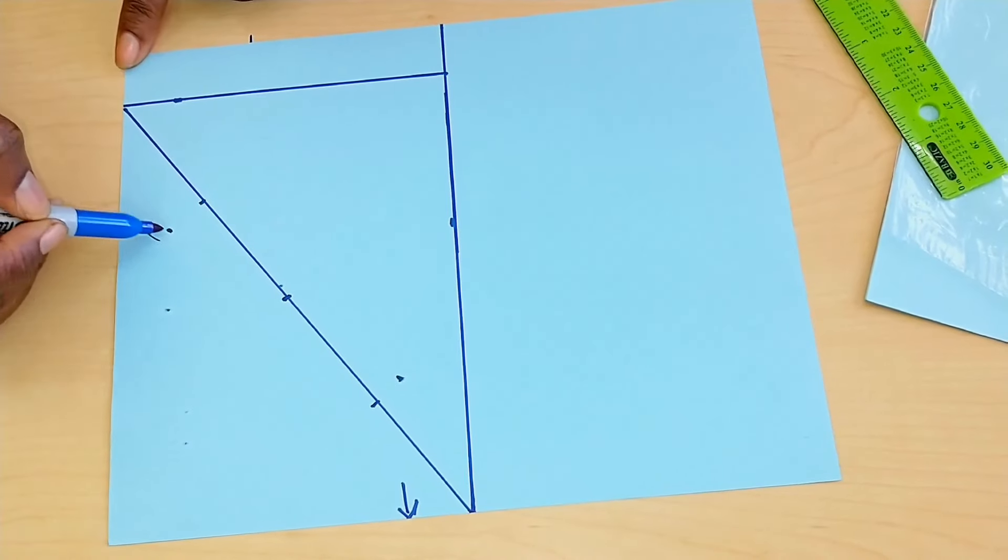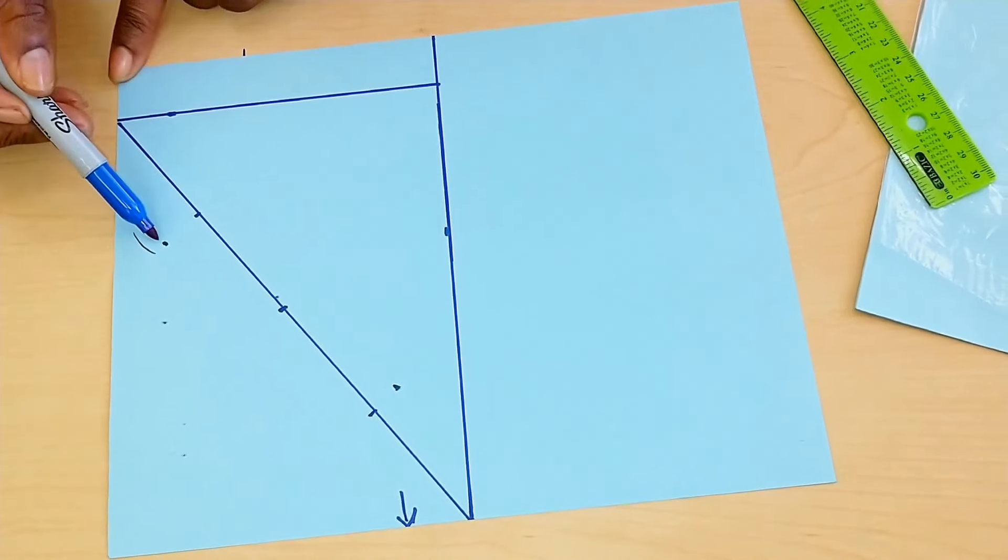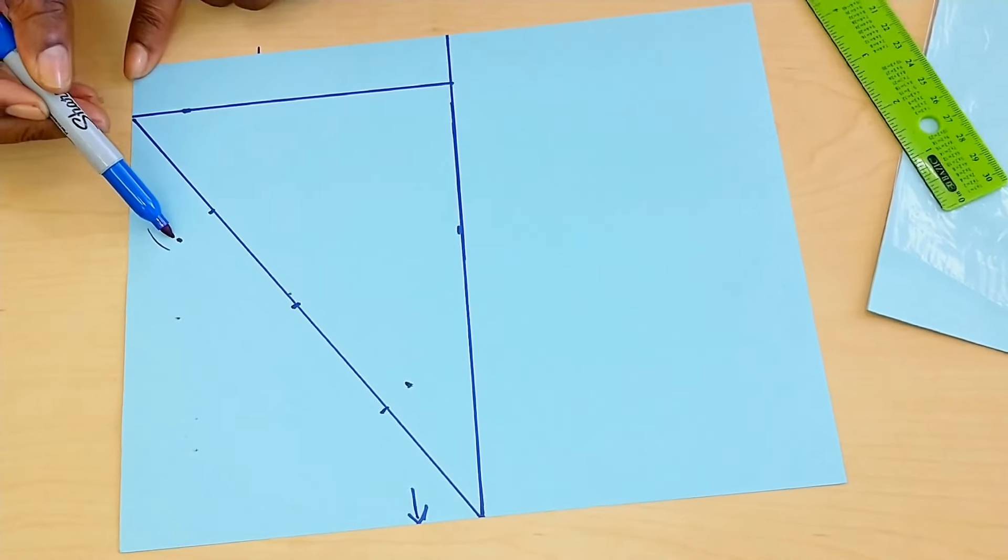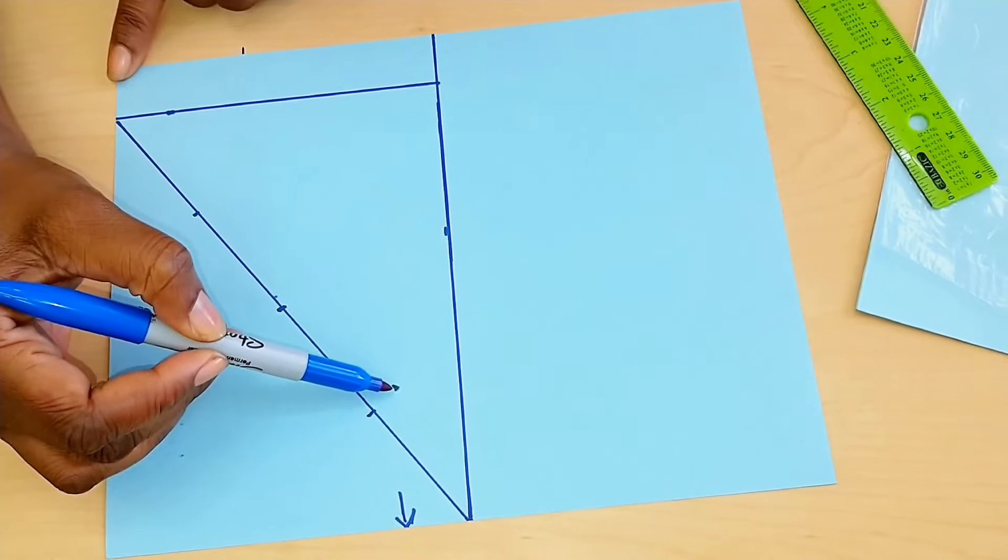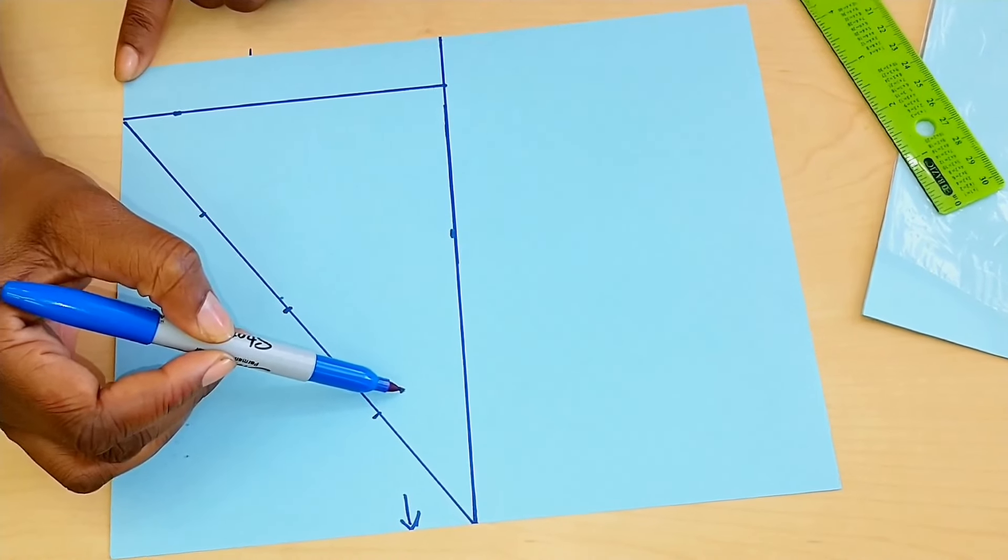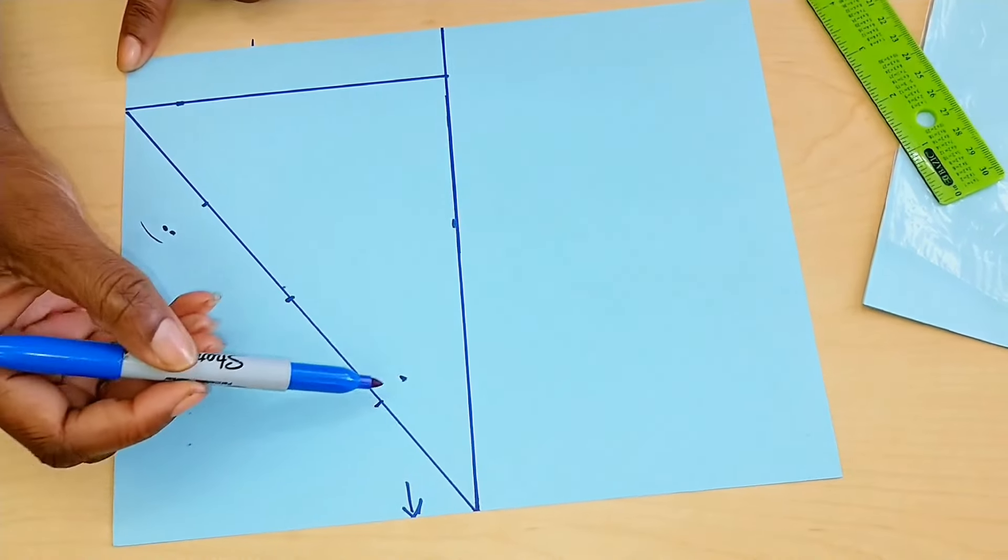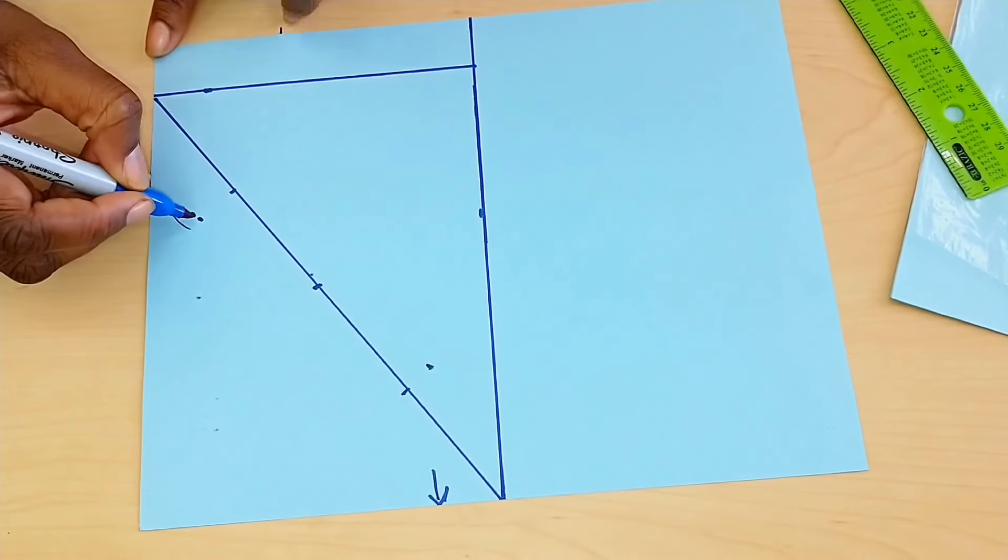This is standard. Whenever you are creating your sleeve, on the upper part you would go up three quarter of an inch, and on the bottom part you would go down or you would go inward half inch.